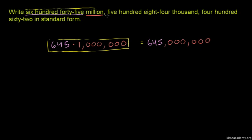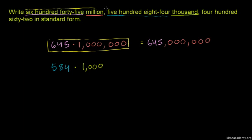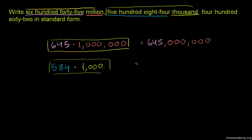So now 584 thousand. 584 thousand is equal to 584 thousand and 0.3 thousand.